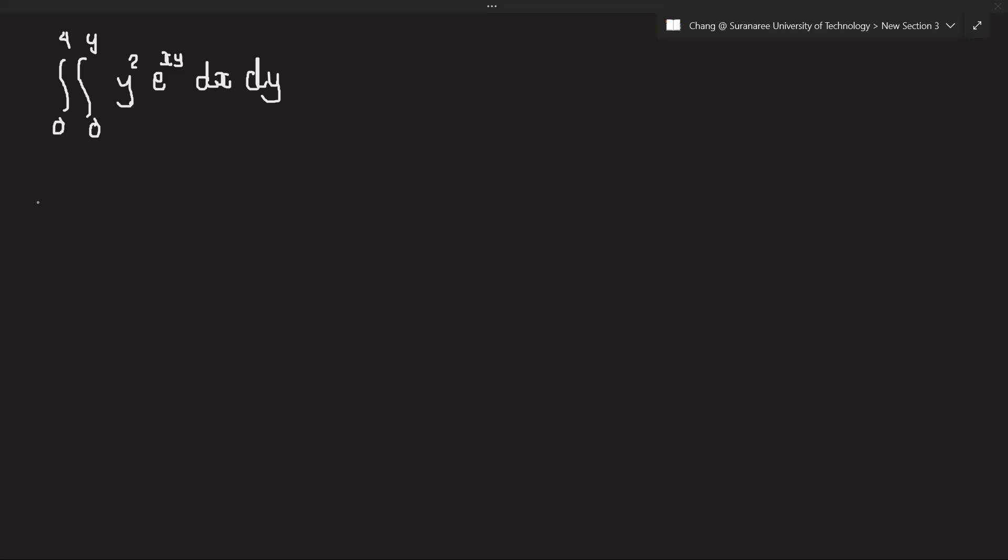So let's integrate with respect to x. The y variable is constant from 0 to 4, y squared is constant, and 0 to 1, e^(xy) dx. So I will, to be clear, I will try like this.